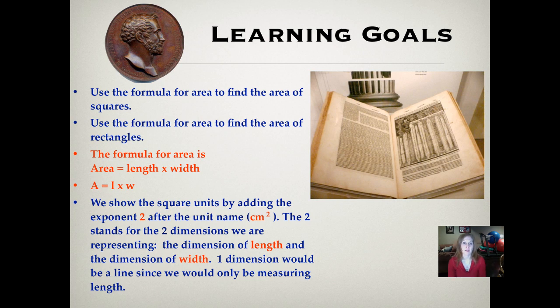Tonight, we're going to use the formula for area to find the area of squares and rectangles. The formula for area is area equals length times width. We're going to use the symbols, letters as symbols, to represent those in our formula. So our area is a capital A, like our perimeter was a capital P, and like our volume will be a capital V. Our length times width, though, are lowercase letters. And honestly, if I was writing that on my paper, I would use a cursive lowercase L, because I don't want you to get that L confused with a 1.